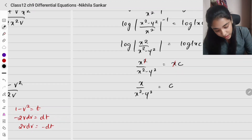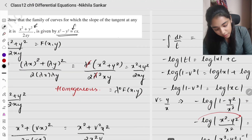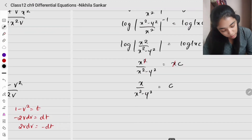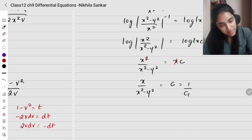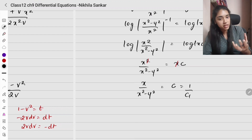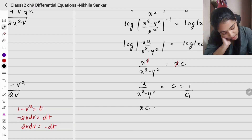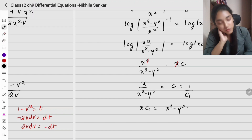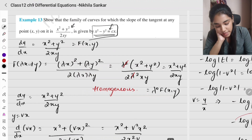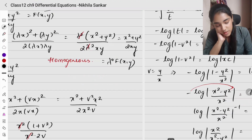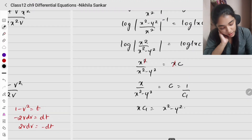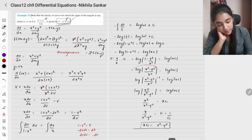Since 1/c is also an arbitrary constant, we can write x squared minus y squared equals cx. Cross multiplying with c1 = 1/c: x times c1 equals x squared minus y squared. This matches what the question asks: x squared minus y squared equals cx. This is the final solution.